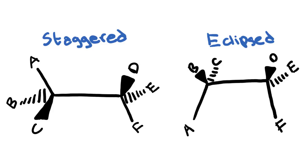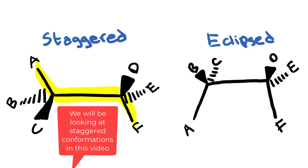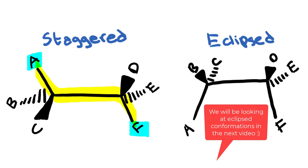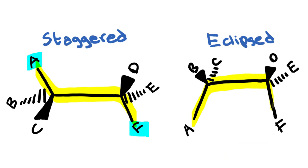In order to understand Newman projections, you first have to understand the difference between staggered and eclipsed conformations. In a staggered conformation, if you look at the backbone, you'll see that one group is going up in the plane and then the other group is going down in the plane — notably group A and group F. In the eclipsed conformation, both of the groups in the plane are going to be pointing in the same direction, so both the A group and the F group are pointing down.